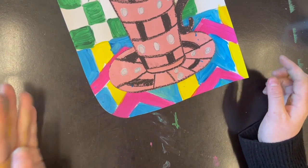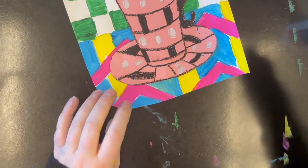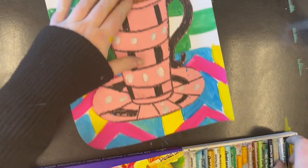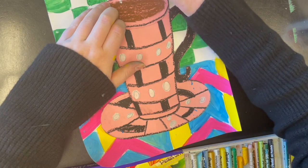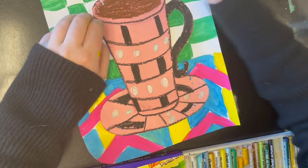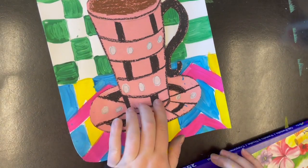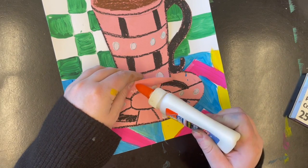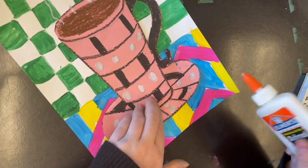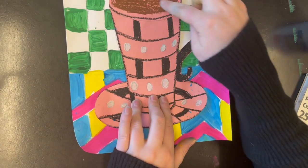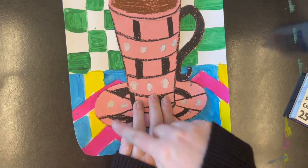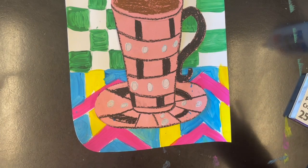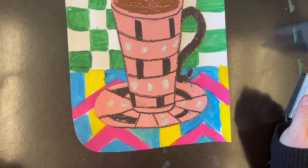Once you have your cup on your saucer, you could use a white oil pastel and add some steam—it looks like it's nice and hot. You could get another piece of paper from the windowsill and cut out marshmallows, add cookies or candy canes or snacks, and then put it on the drying rack.